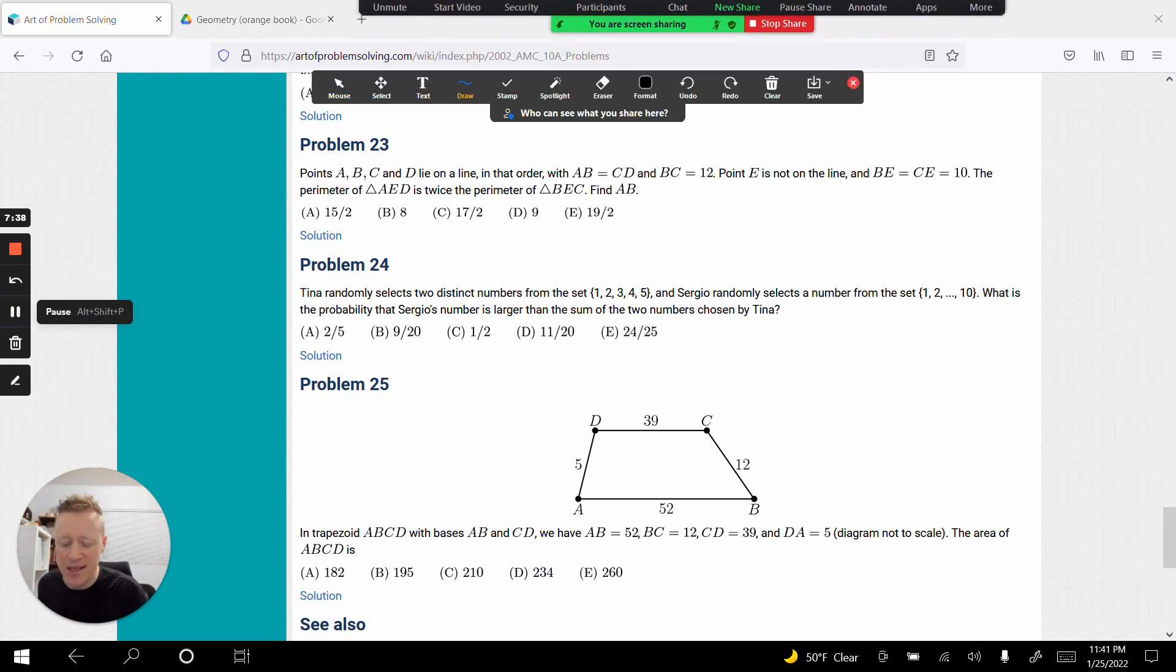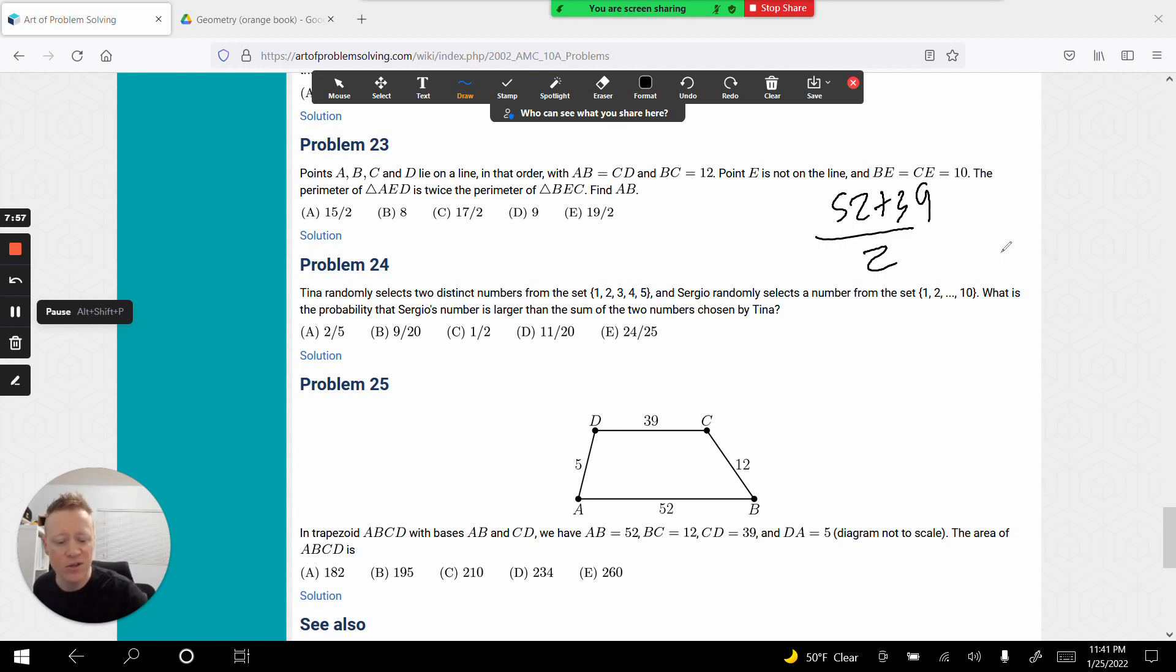So, in trapezoid ABCD with bases AB and CD, AB is 52, BC is 12, CD 39. The area of ABCD, the trapezoid is, the area of a trapezoid is the average of the bases times the height. So you've got 52 plus 39 over 2 times the height. How are we going to get that height? Now, you have to understand the diagram's not to scale. 52 plus 39 is going to be 91. So, you've got 91 over 2 times the height.